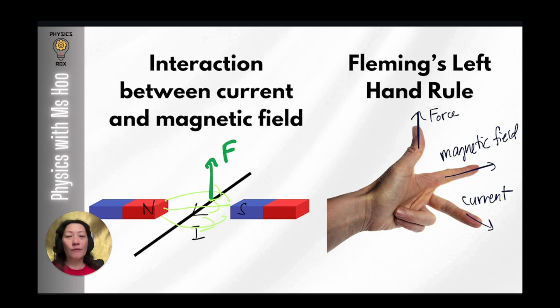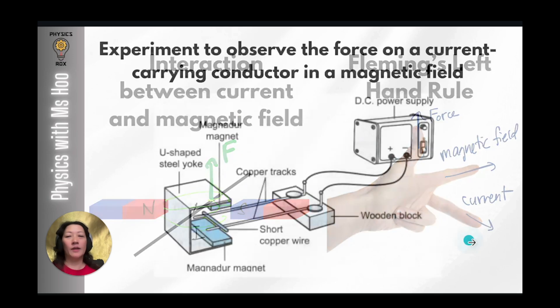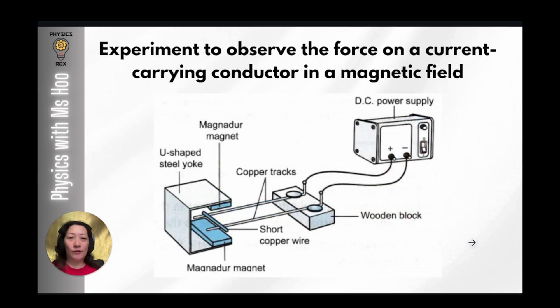Now that we know what happens when a current carrying conductor is placed in a magnetic field, how do we observe this in the lab? This is the experiment which we can use to observe the force on a current carrying conductor in a magnetic field.